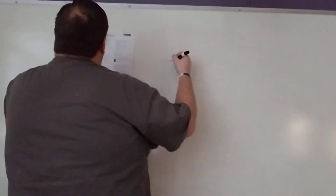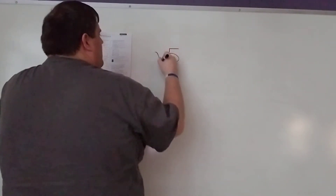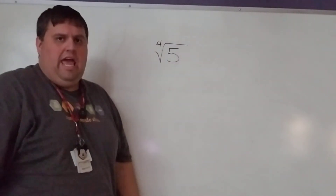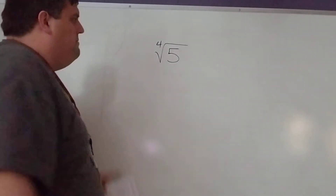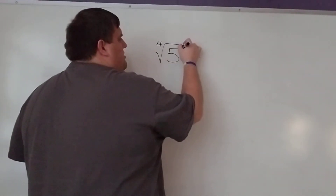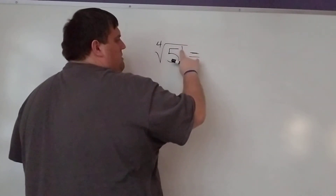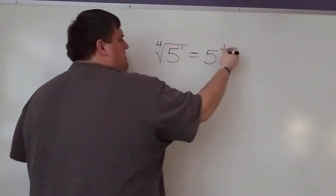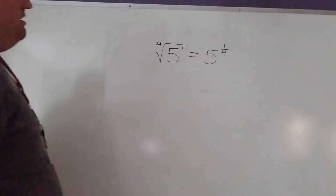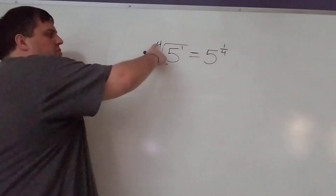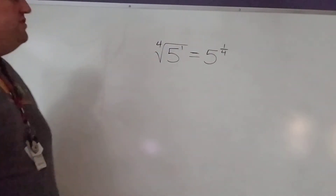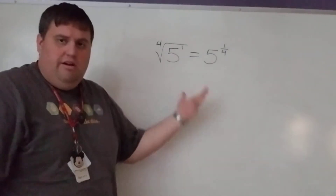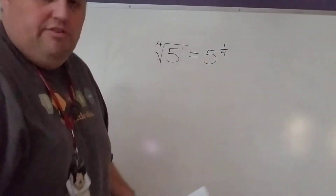The first one: the fourth root of five. We want to rewrite it with a fractional exponent. The exponent on the inside is always the numerator — that would be one — and the denominator comes from the outside, so the fourth root of five is the same as five to the one-fourth. If there was another number besides one inside, it would just go on top the same way.